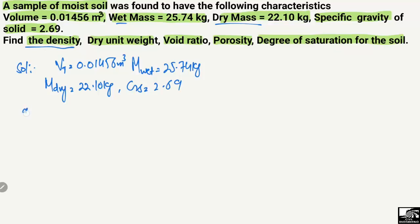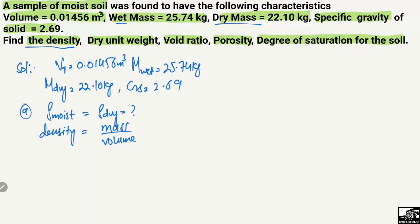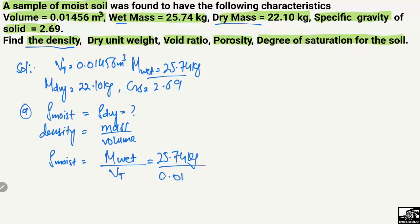The first unknown is the density — both the moist density and the dry density. To find out the moist density, we use the basic formula: density equals mass over volume. So moist density equals the total mass divided by the total volume. The mass is 25.74 kilograms and the total volume is 0.01456 cubic meters. Calculating these values, the moist density equals 1767.56 kilograms per cubic meter.